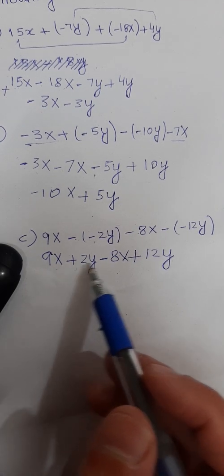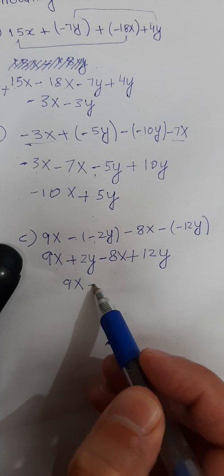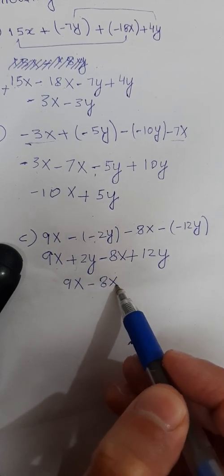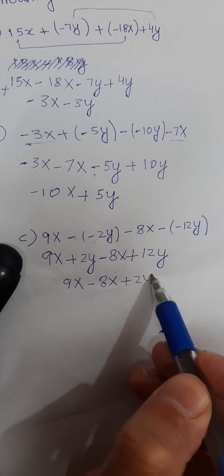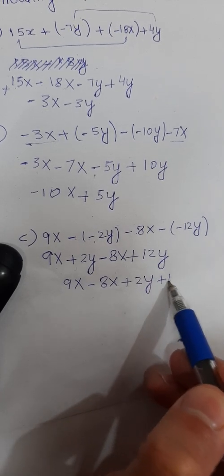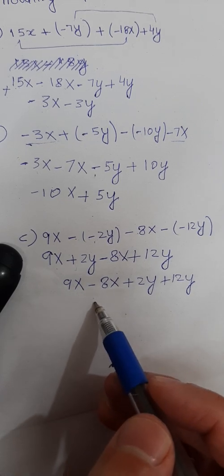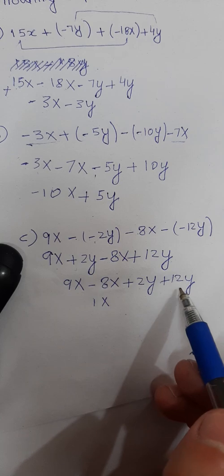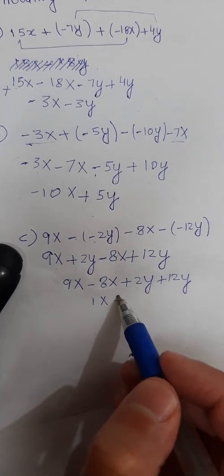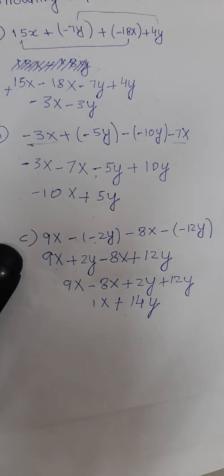Combining like terms: 9x minus 8x is 1x, and plus 2y plus 12y is plus 14y. So the solution for part c is x plus 14y.